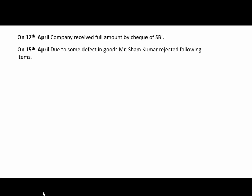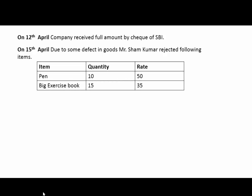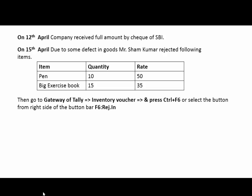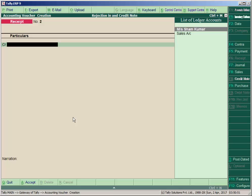On 15th April, due to some defect in goods, Mr. Sham Kumar rejected the following items: pen is 10, and big exercise book is 15. The rate will be the same. For that, go to gateway of Tally, inventory vouchers, and press Ctrl+F6, or select the rejection in button from the right side button bar.